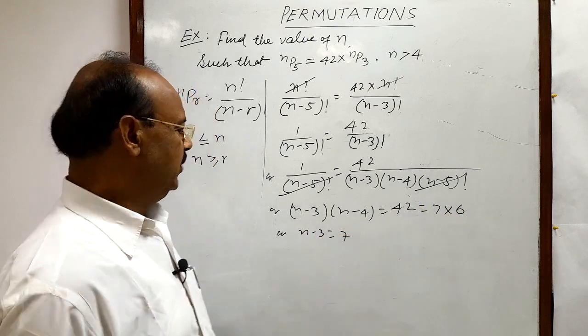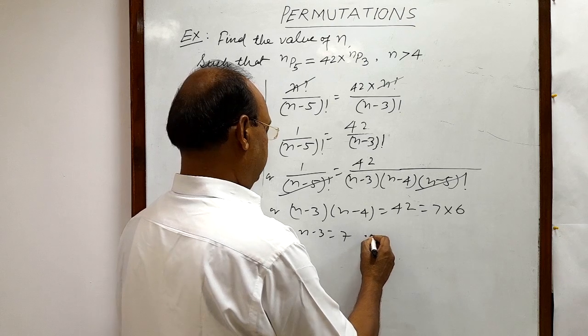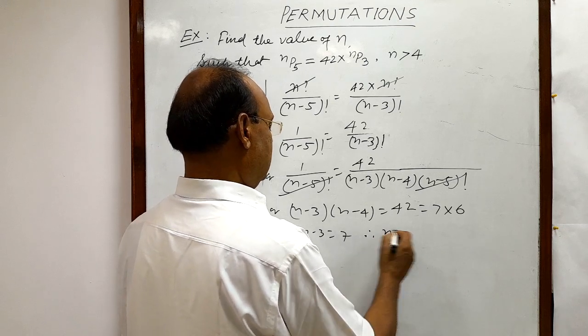Same result you will get. So, here N minus 3 is equal to 7. And therefore, we will get N is equal to 7 plus 3.